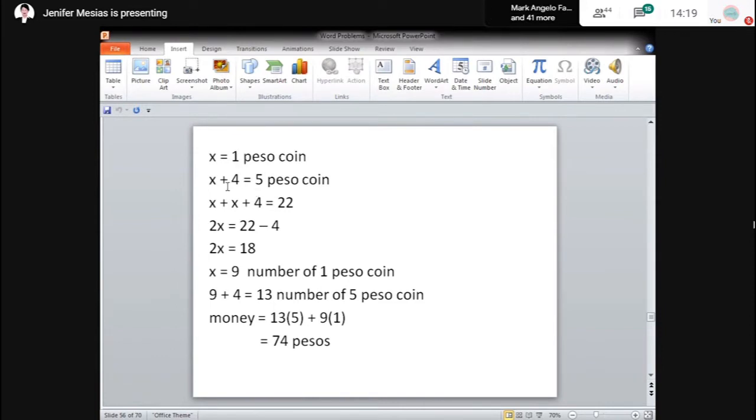So, i-add lang natin. X, which is yung 1 peso coin, plus yung 5 peso coin, which is X plus 4, so eto yun, equals 22. Then, solving completely, so X plus X is 2X, equals... so magsasubtrak ka ng negative 4 dito sa may right side tsaka sa left side, so magkakaroon tayo ng 22 minus 4. So, 22 minus 4 is 18, divide both side by 2, so therefore, ang X mo is 9.